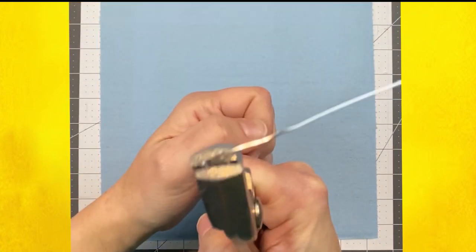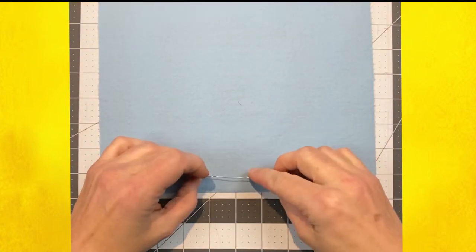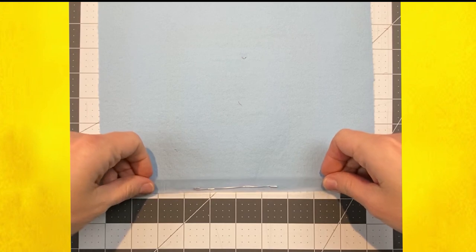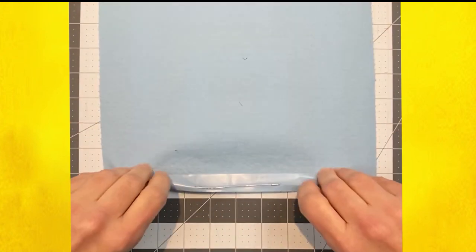Now line it right up at the untorn end of the shop towel. Take a nice long piece of tape, put it right along the edge and over the paper clip.